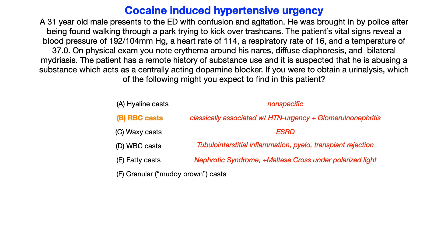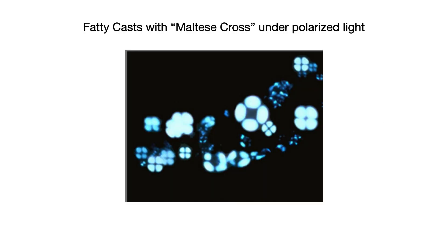For E, fatty casts are associated with nephrotic syndromes. Most of the time, the exam will give you the buzzword 'Maltese cross,' which is what the urine looks like when placed under polarized light. You should absolutely commit this image to memory — if you see a Maltese cross, click fatty casts, that's the answer.